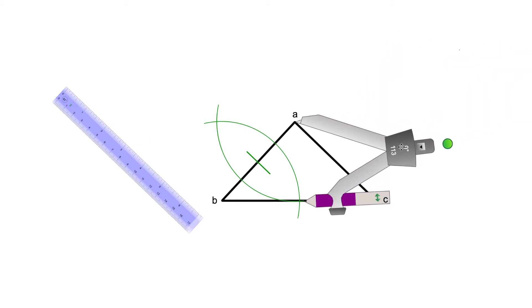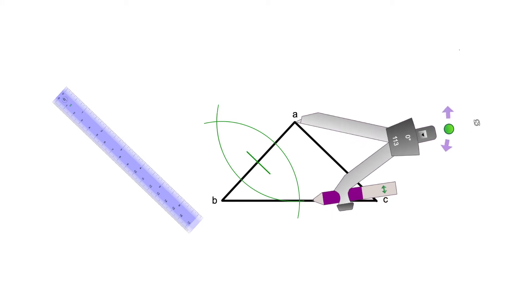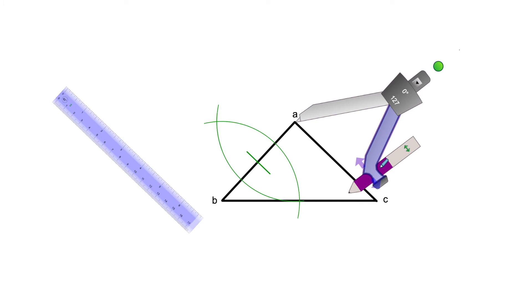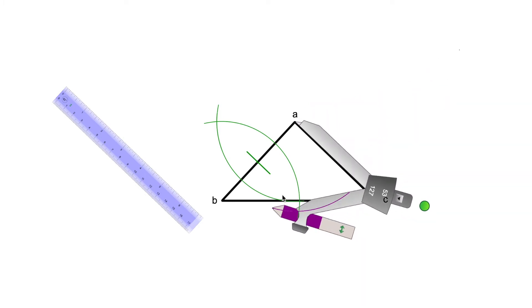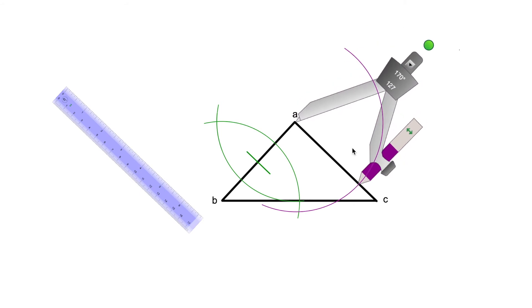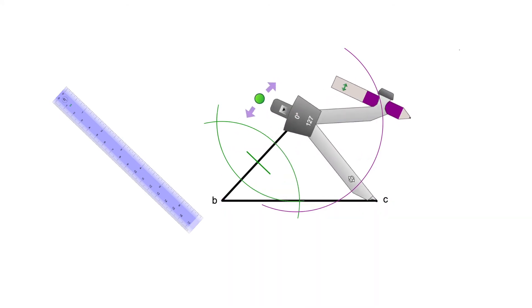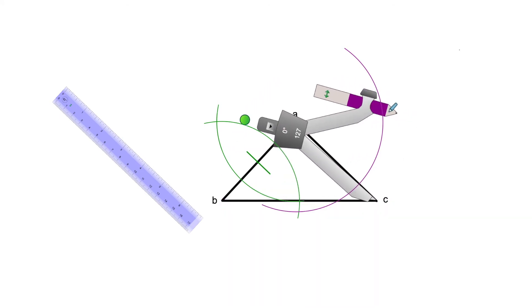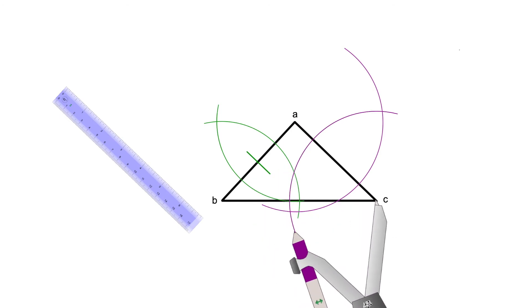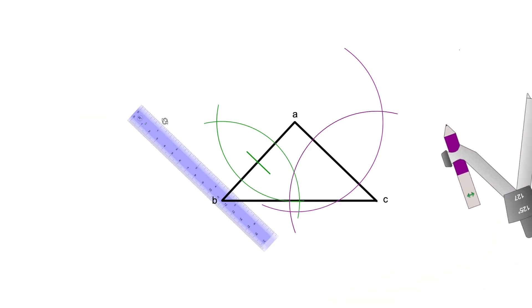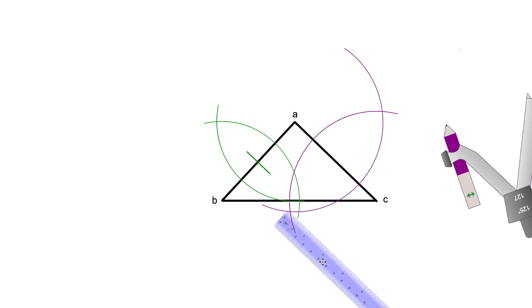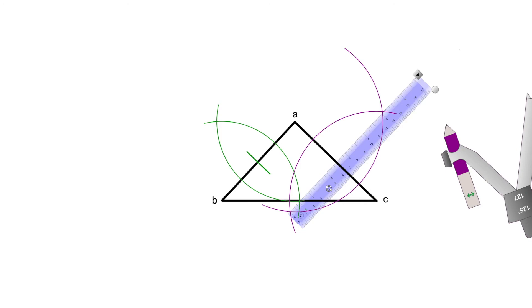I'm going to do the midpoint of segment AC. Again, I'm going to place the needle in one of the borders, open my compass a little bit more than half of the line, and trace an arc. With the same size, I'm going to put the needle on the other side and trace another arc. Once I make the two arcs, I can see that there are two meeting points, and that is when I grab my ruler, join those two points, and trace a line — and that is going to be the midpoint of segment AC.